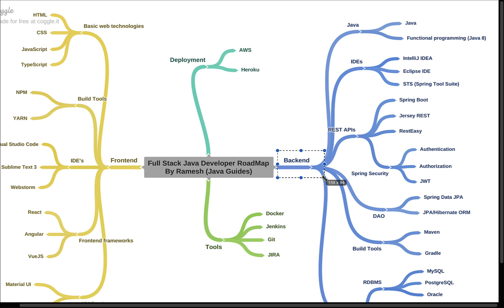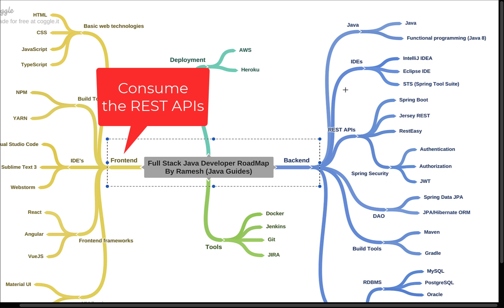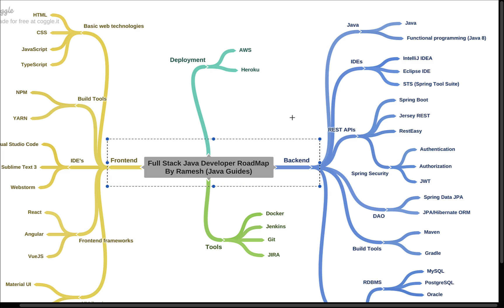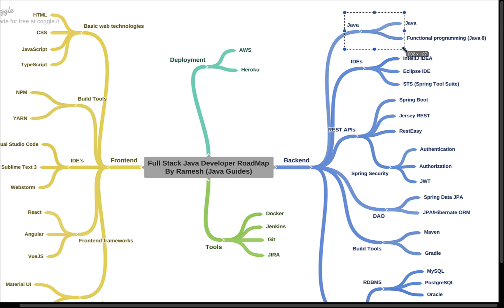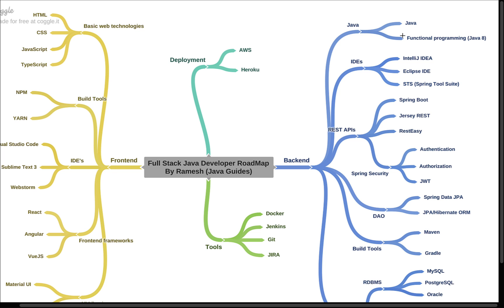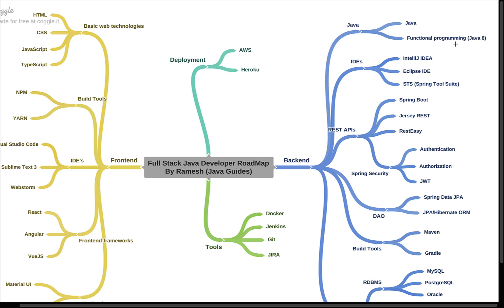Now let's look at back-end application development. In full stack Java development, the back end creates and exposes REST APIs, and the front end consumes them. As a full stack Java developer you need to know Java-related technologies, frameworks, and tools. Start with Java fundamentals and make sure you're familiar with Java 8 features like lambda expressions, functional interfaces, Stream API, and the Optional class.